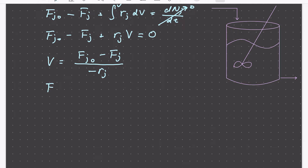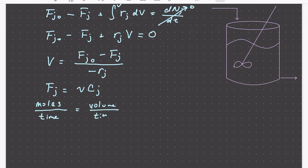Often the molar flow rates are represented as the product of the volumetric flow rate times the concentration. The molar flow rate has units of moles per time, the volumetric flow rate has units of volume per time, and the concentration has units of moles per volume.